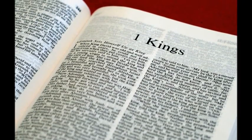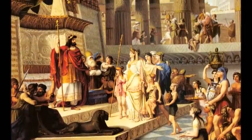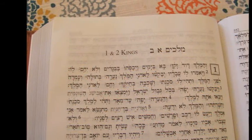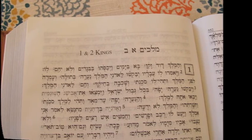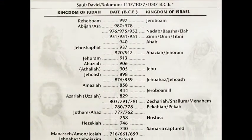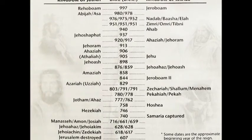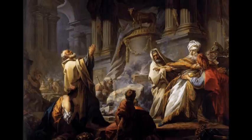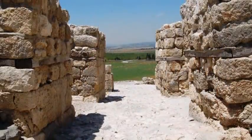Introduction to First Kings. The book of First Kings continues the dramatic history of Israel's kings. It is not just recorded history for the sake of facts, but a history that reveals the faithfulness or unfaithfulness of the kings to the covenants or agreements that God had made with his chosen people. Each ruler's obedience or disobedience either brought peace and prosperity or war and devastation.